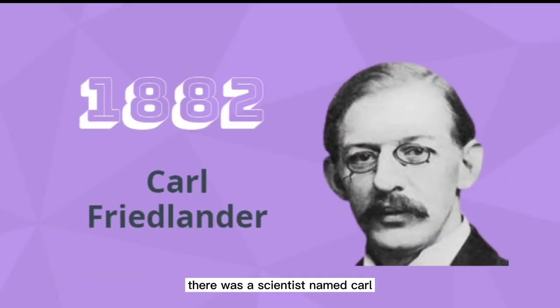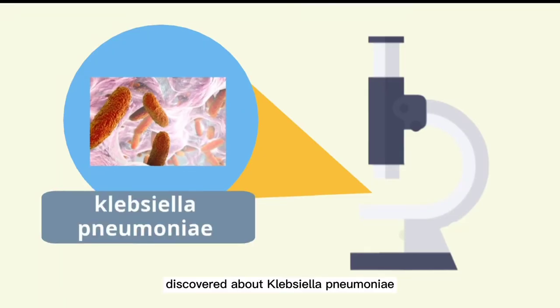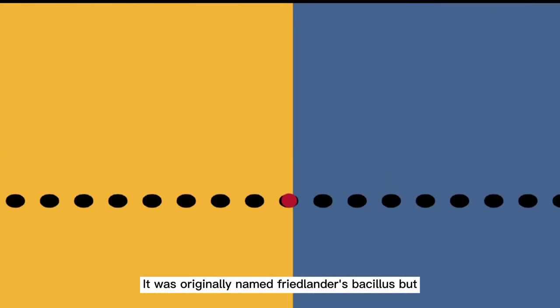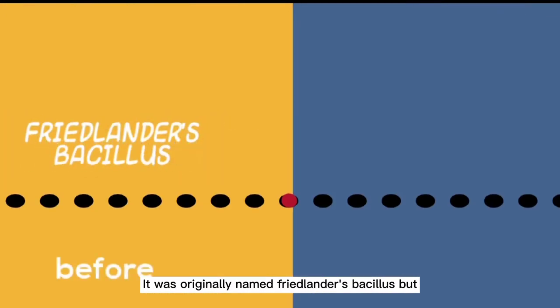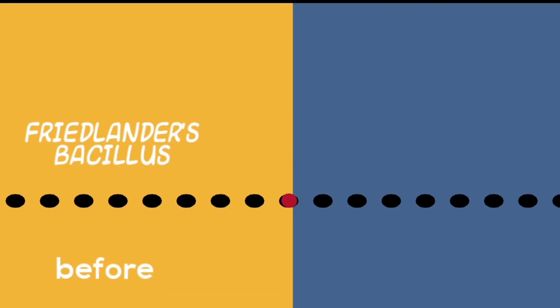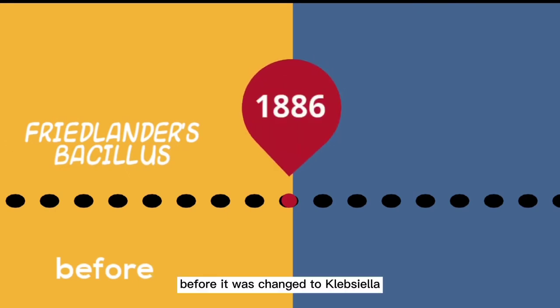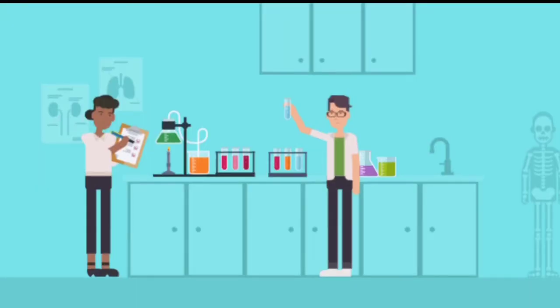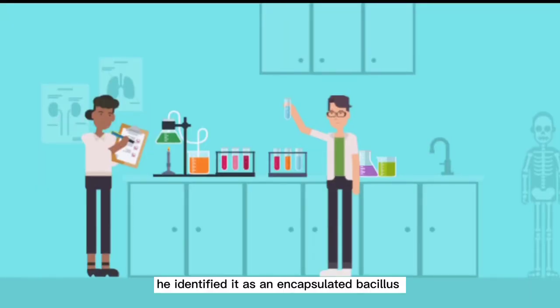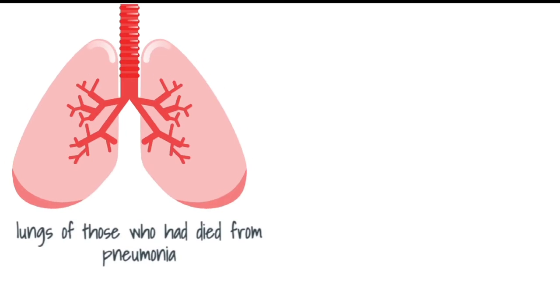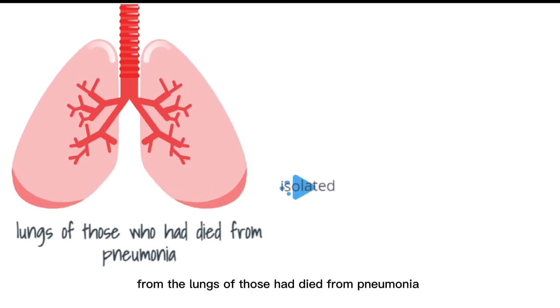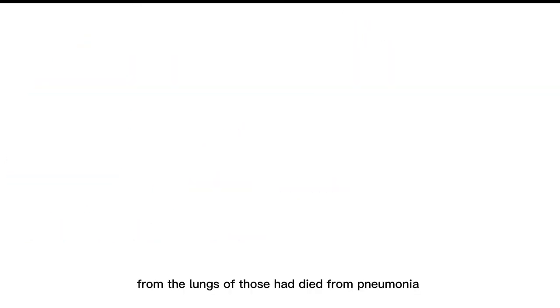In 1882, there was a scientist named Carl Friedlander who was the first to discover Klebsiella pneumoniae. It was originally named Friedlander's bacillus, but until 1886, before it was changed to Klebsiella. It was defined as an encapsulated bacillus after isolating the bacterium from the lungs of those that died from pneumonia.